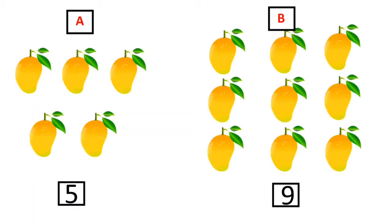Number 9. So children, tell me between 5 and 9 which number is a smaller number? Means the number which comes first. Even if you look at the images you can see the number with lesser value — means the smaller number. So between 5 and 9, which number is a smaller number? 5 is a smaller number.